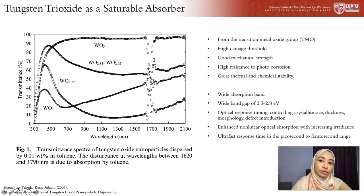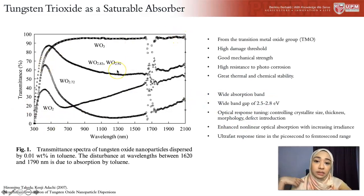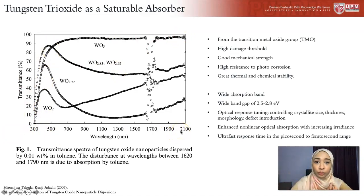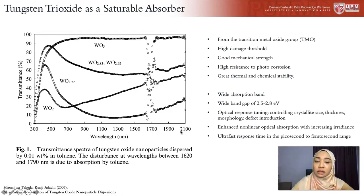In general, tungsten trioxide belongs to the transition metal oxide group. This group has a high damage threshold, good mechanical strength, and high resistance to photocorrosion with great thermal and chemical stability. Specifically for tungsten trioxide, it has a wide absorption band and a wide transmittance band extending from 500 to 2100 nanometers. It also has a wide band gap of 2.5 to 2.8 eV, and its optical response can be tuned by controlling its crystallite size — down to nano or micro size — its thickness, its morphology, as well as by introducing defects.